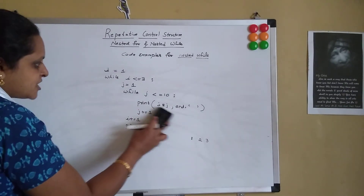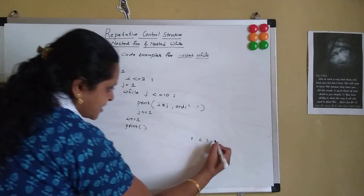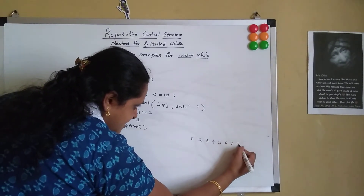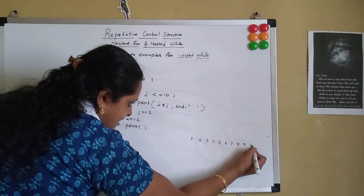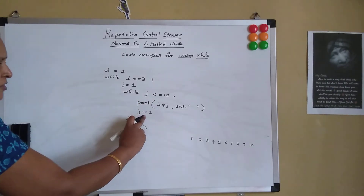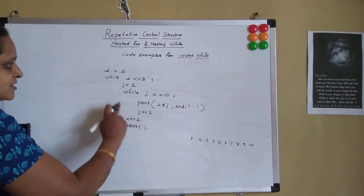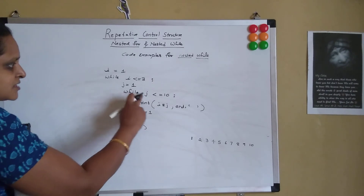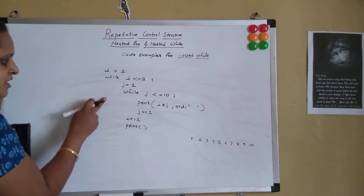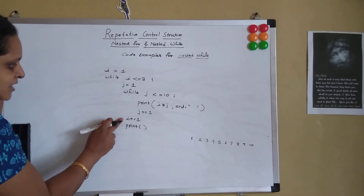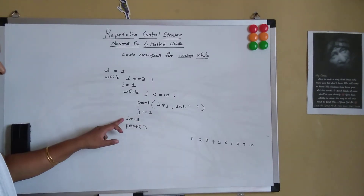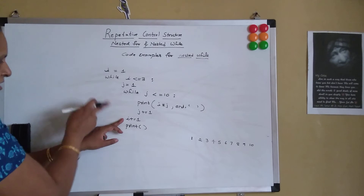For the same value of i equal to 1, j becomes j+1, so it becomes 2. So 1 * 2 equals 2, and since we have end=' ', it gives a space and prints 2 in the same line. Now i is still 1 because the j loop hasn't ended. So it continues: 1*3=3, 1*4=4, and so on through 1*10=10. When j increments to 11, it checks while j <= 10 — the condition fails, so it comes out of the while loop.